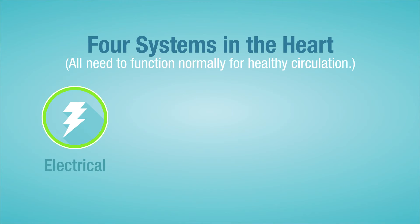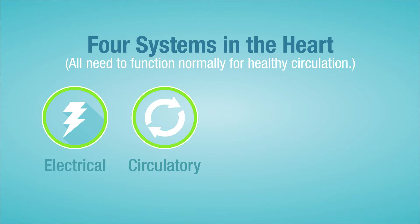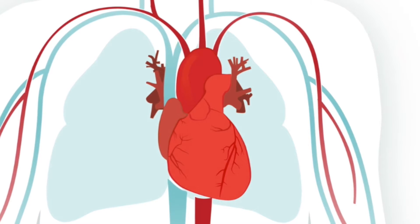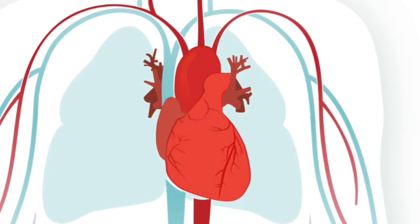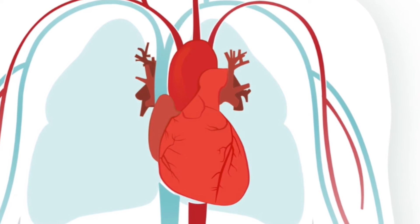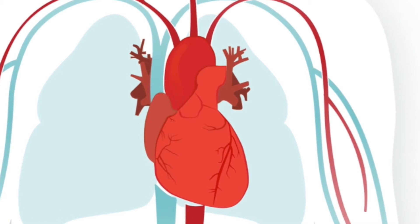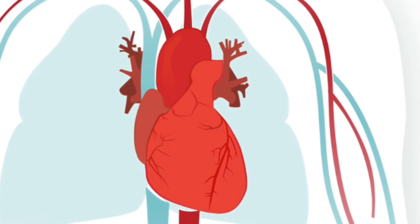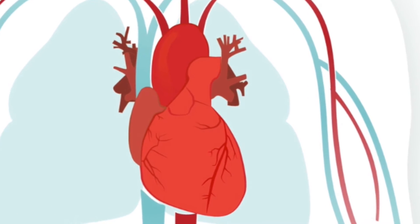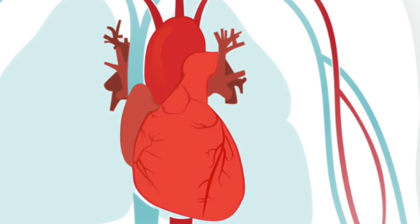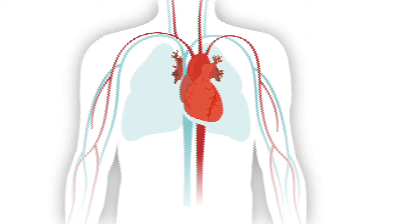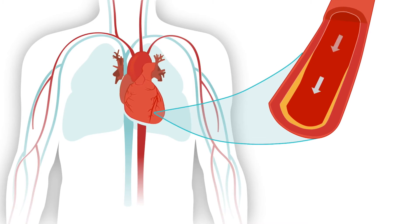Since the heart is a muscle, it consumes oxygen and has to have nutrients and oxygen. It has its own set of arteries that carry oxygen-rich blood to the heart muscle, dividing continuously and insinuating their way through the heart muscle to feed every cell. Those are called the coronary arteries.